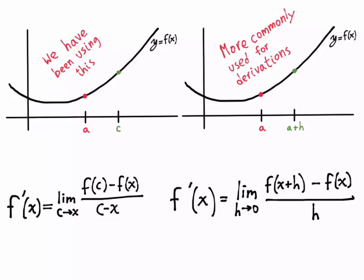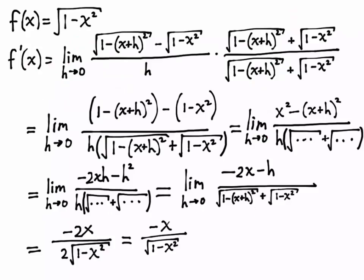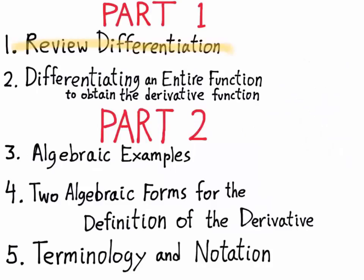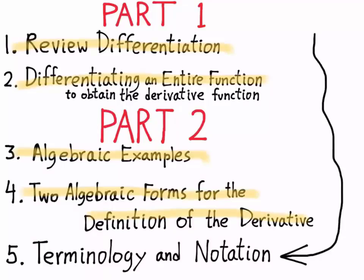Just in case you want to see the answers to check your work or get unstuck, I'll flash the answers on the screen. You can always come back to the video and pause to look at the steps as I did them. So we reviewed differentiation, differentiated an entire function, saw algebraic examples, and saw the two algebraic forms. The last part of the lesson is terminology and notation.